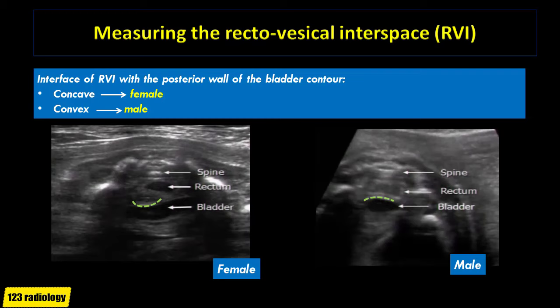Another method to differentiate male from female is by looking at the interface of the recto-vesical interspace with the posterior wall of the urinary bladder. If this interface is concave, it indicates a female fetus. If this interface is convex, it denotes a male fetus. On the image on the right side of the screen, the interface with the urinary bladder is concave, denoting female fetus. On the image on the left side of the screen, this interface is convex, denoting male fetus.